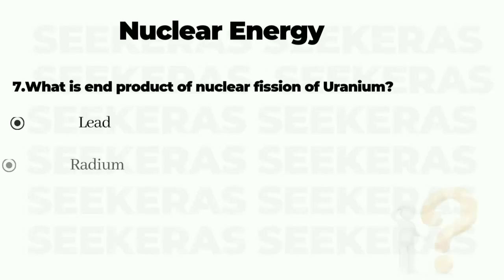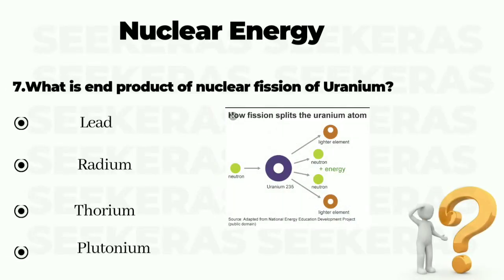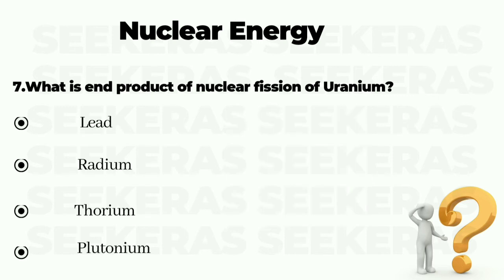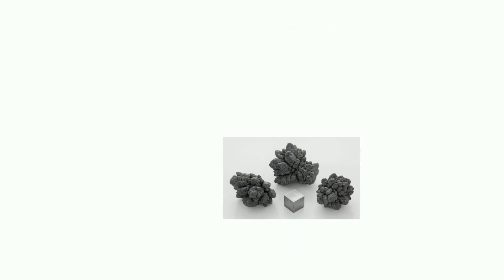Question number 7. What is the end product of nuclear fission of uranium? Option A lead, option B radium, option C thorium, and option D plutonium. The correct answer is option A, lead.